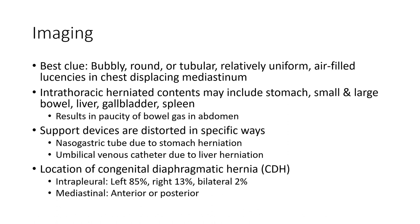Imaging best clue: bubbly, round, or tubular, relatively uniform, ethereal lucency in chest displacing mediastinum. Intrathoracic herniation may include stomach, small or large bowel, liver, gallbladder, spleen, resulting in paucity of bowel.